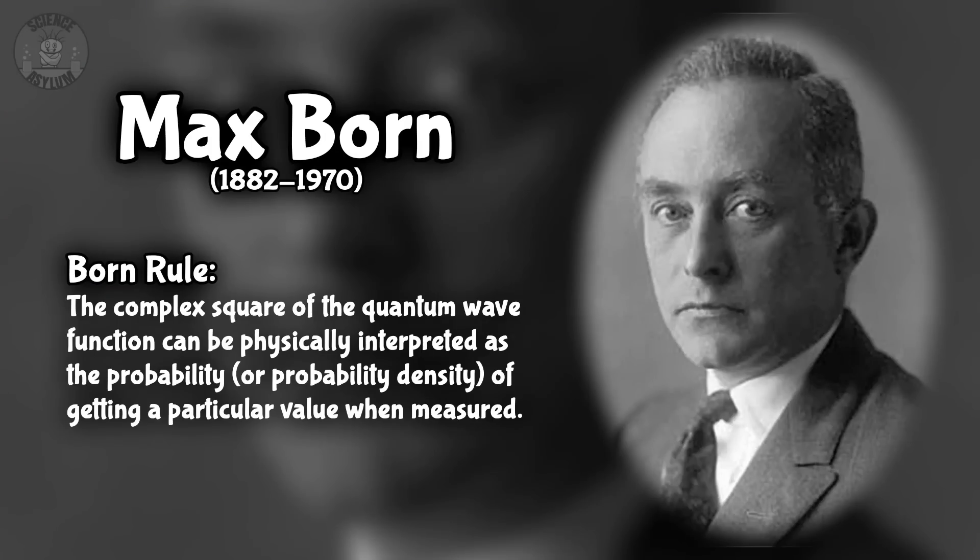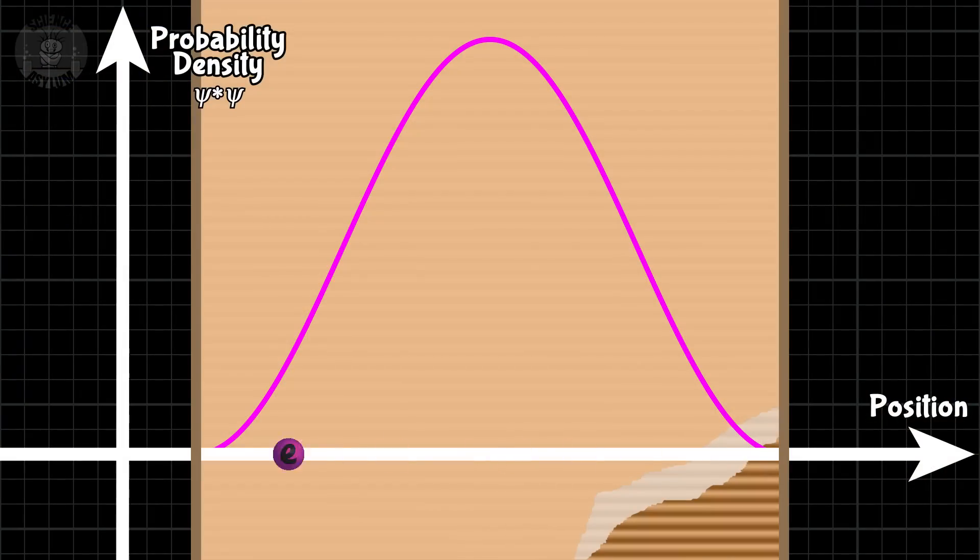This view of the wave function is called the Born Rule, named after Max Born, who came up with it in 1926. This realization was groundbreaking. So, we'd say this is the probability density for position.